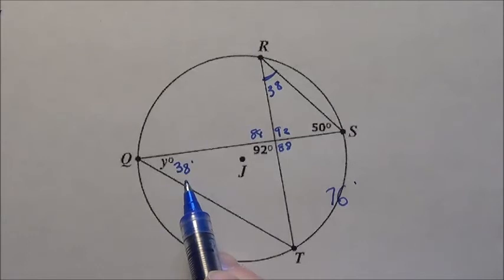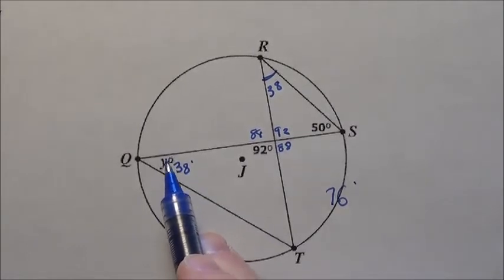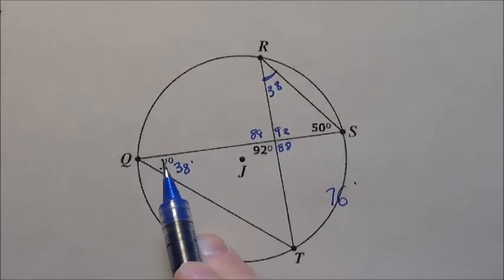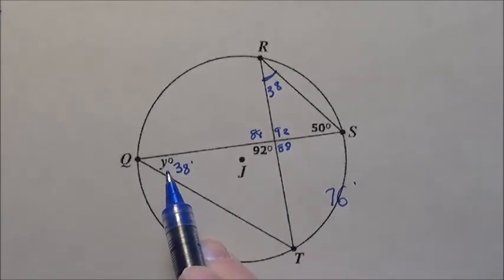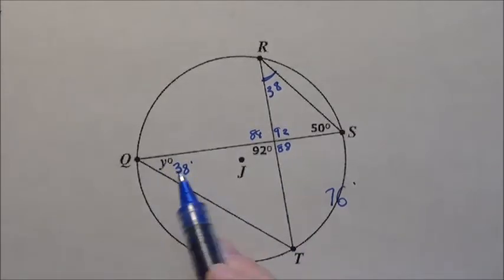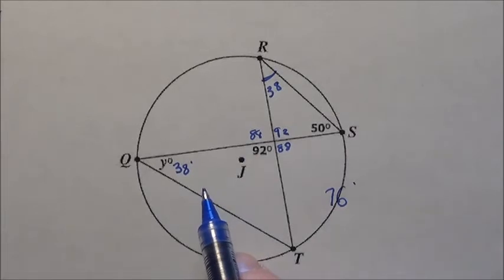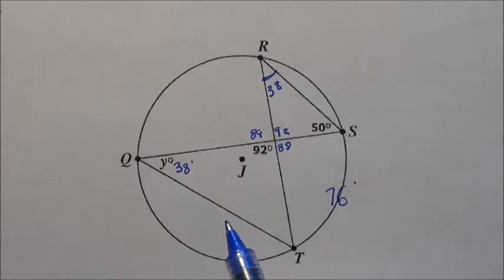The answer is option A, 38 degrees. Even looking at this, it looks small. One option was 92, which makes no sense. Another was 88, which is way too much. The only two possible options were 50 and 38. So right away you could have chosen between A and B, even if you had to guess.